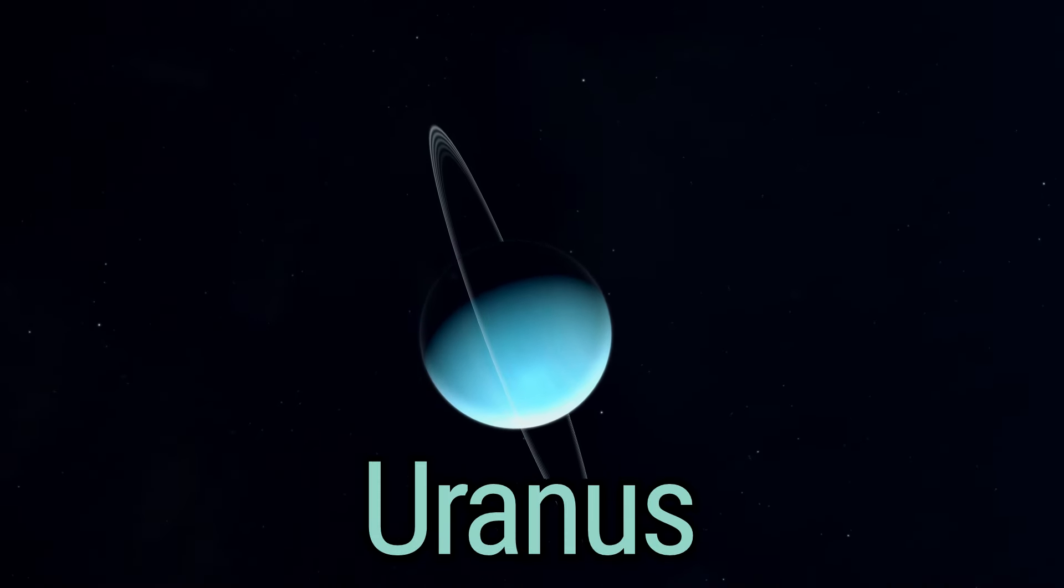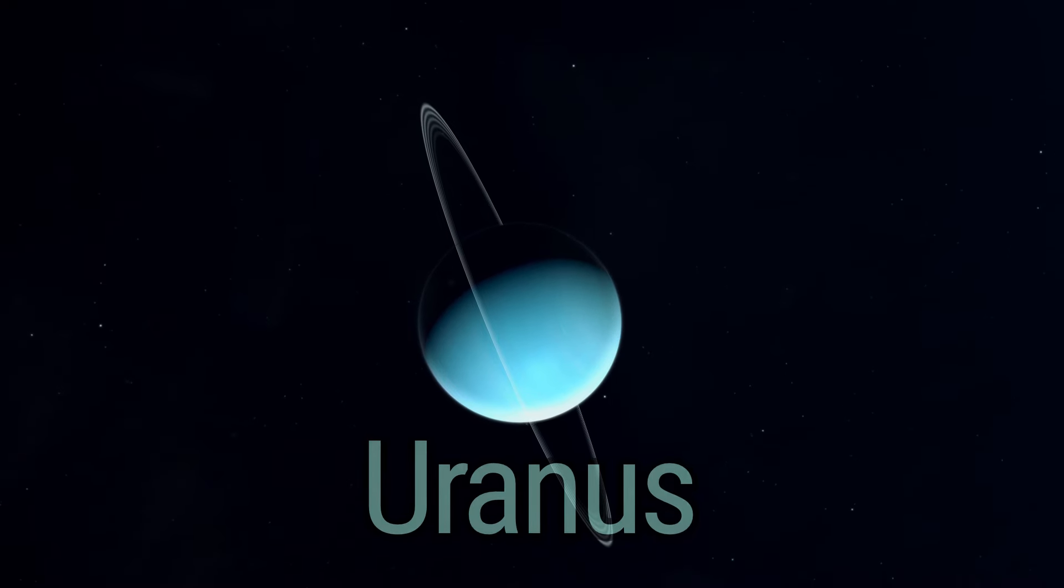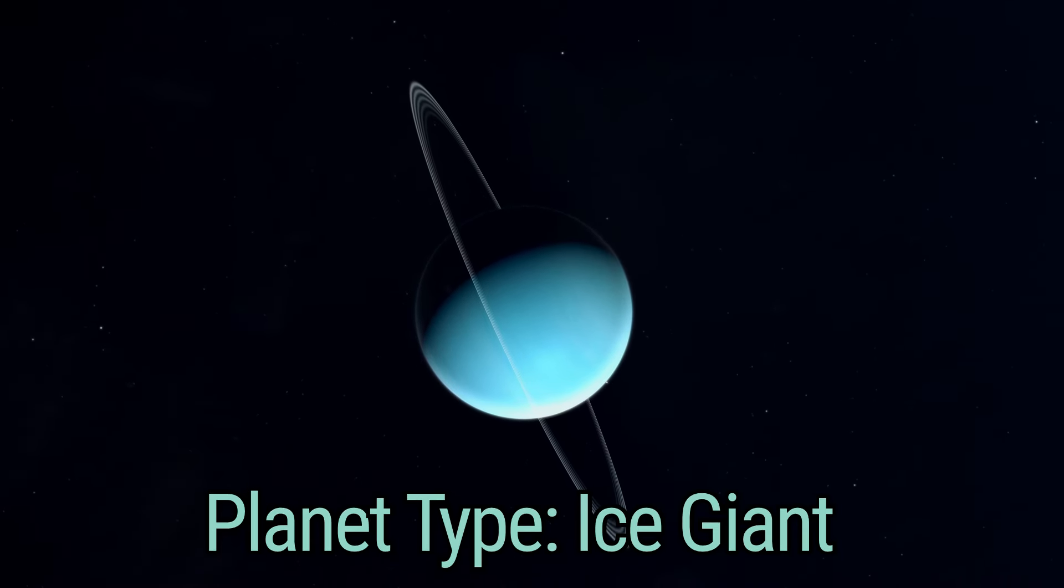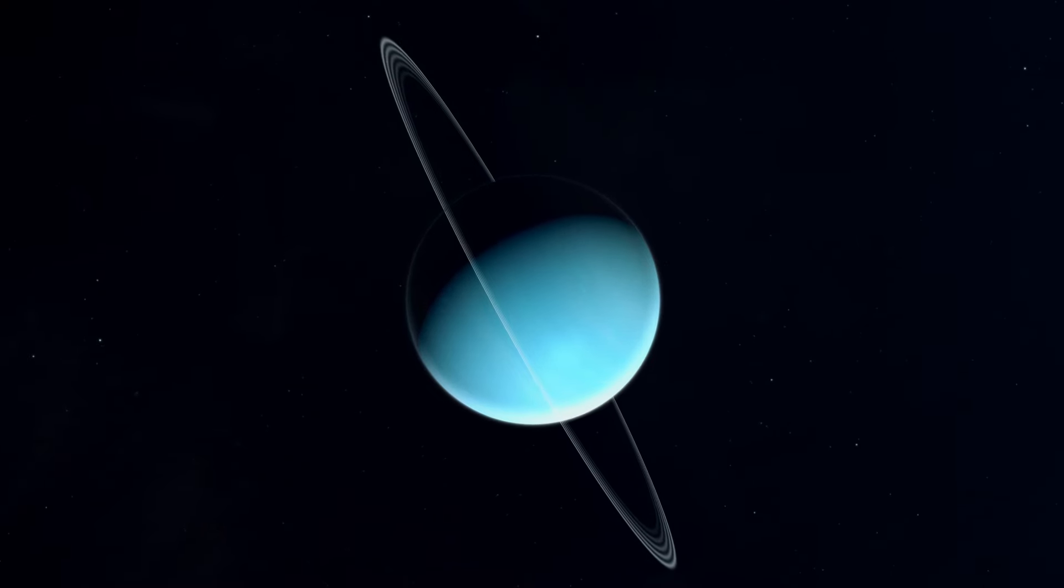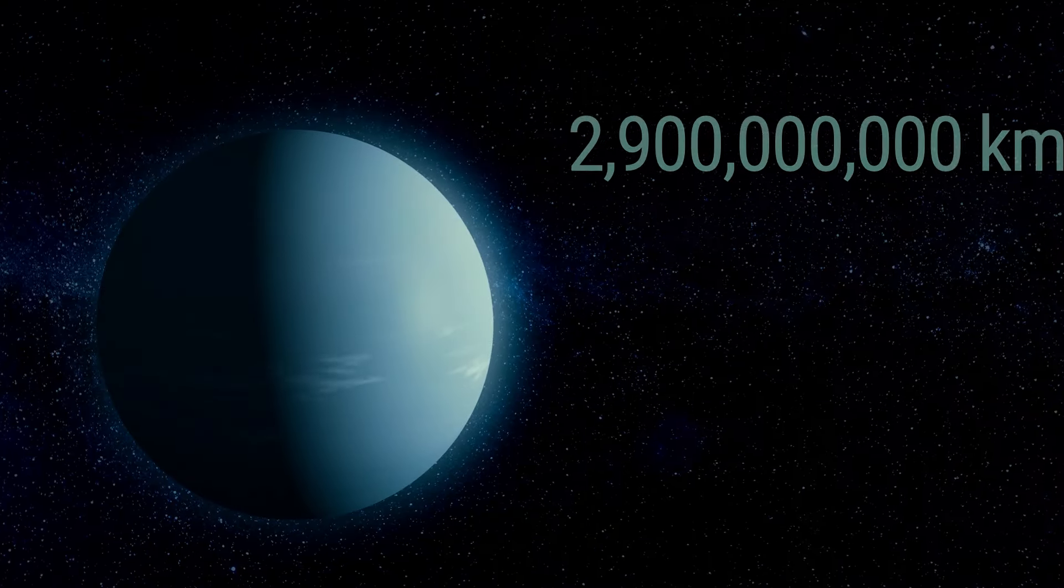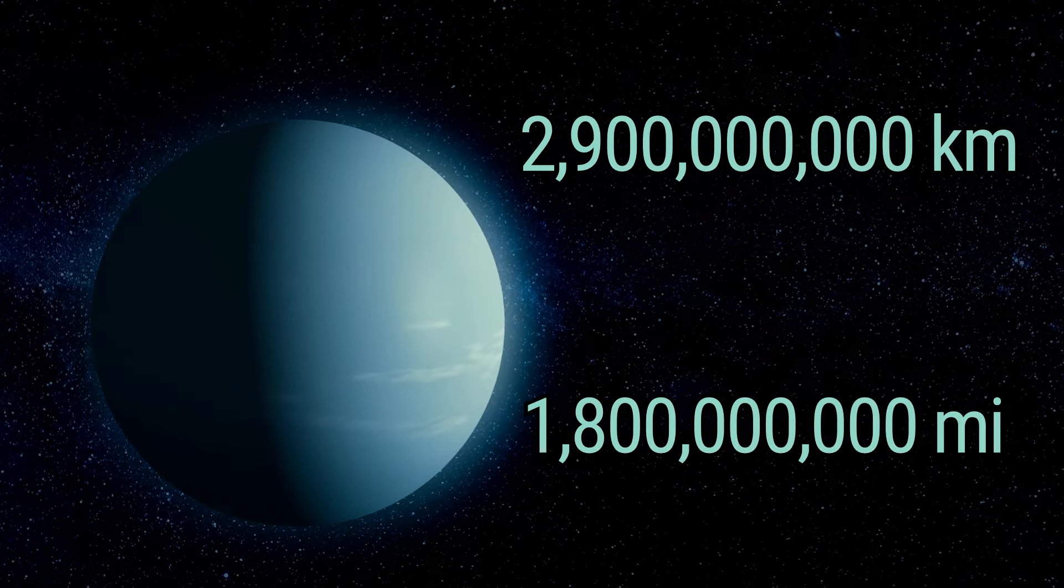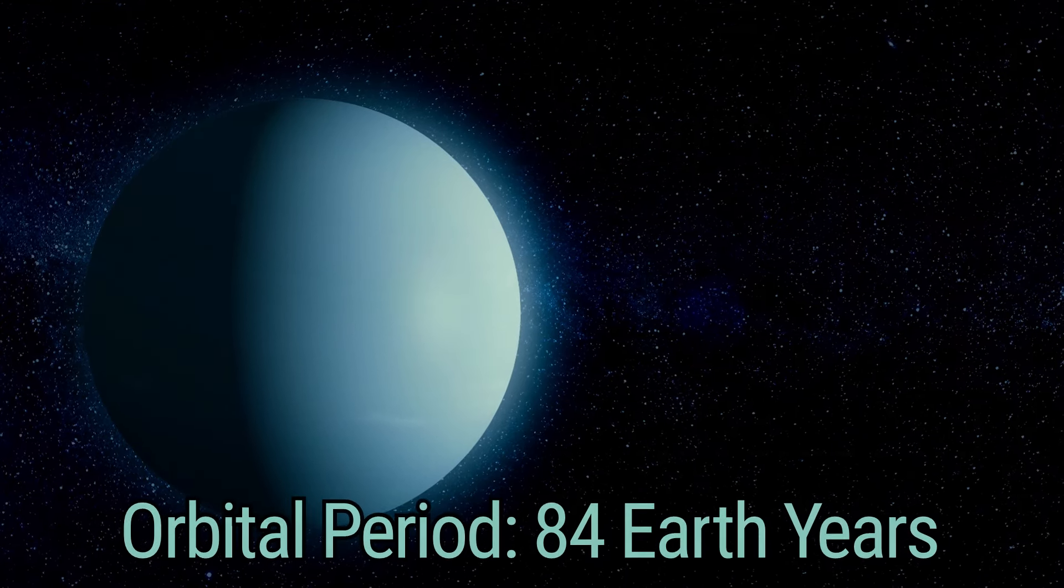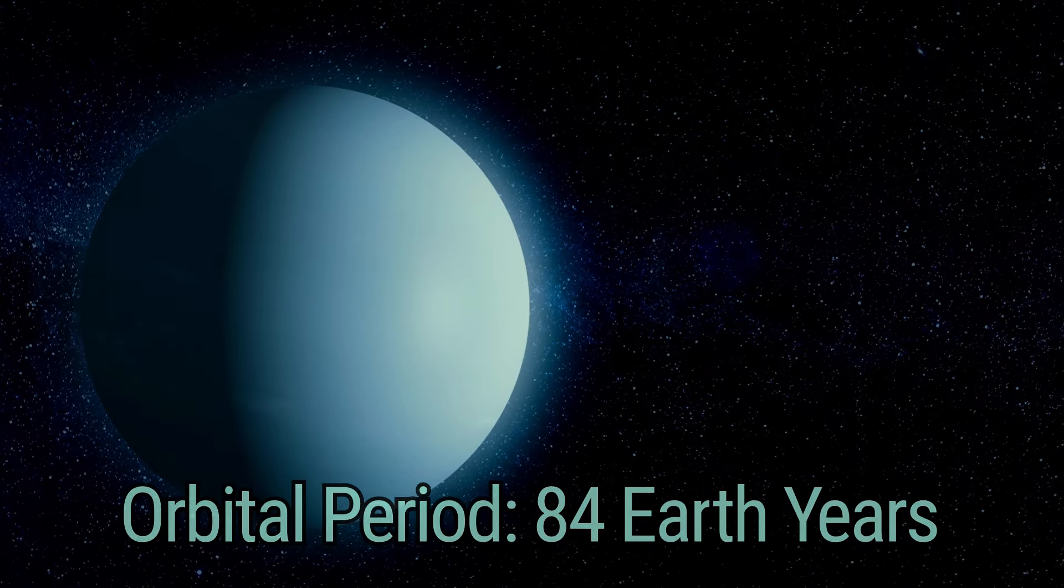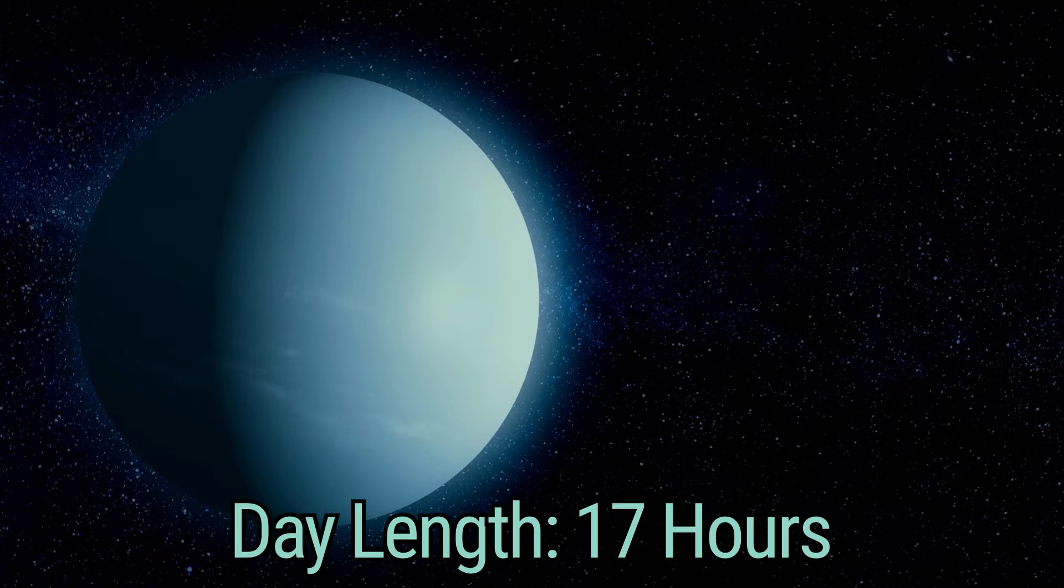Next, we arrive at Uranus, the sideways spheroid, an ice-giant type planet that is tilted on its side. Its average distance from the sun is a frigid 2.9 billion kilometers or 1.8 billion miles, and it takes 84 Earth years to complete one Uranian year, with a day lasting just over 17 hours.